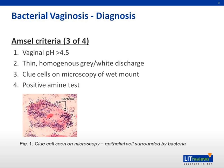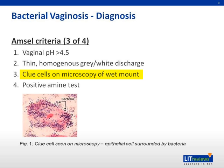BV is usually diagnosed using Amsel's criteria, where at least three of the following four conditions must be met: number one, a raised vaginal pH of more than 4.5; number two, thin homogeneous gray or white vaginal discharge; number three, the presence of clue cells on wet preparation microscopy; and number four, a positive amine test demonstrated by the release of a fishy odor on mixing vaginal discharge with 10% potassium hydroxide. Organisms are cultured from a high vaginal swab for diagnosis.